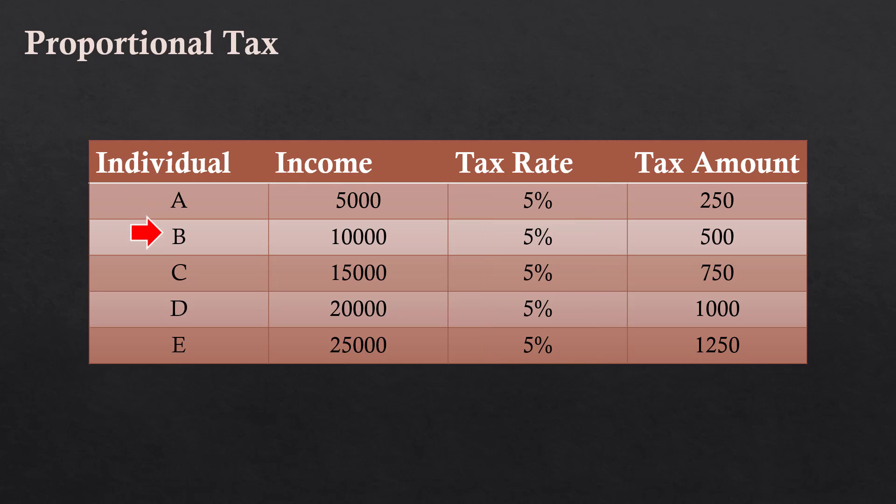Income of the individuals A, B, C, D and E changes from Rs. 5000 to Rs. 25,000. Each individual pays only 5% of his income. In other words, each individual has to pay 5% of the income by way of tax. Though the tax rate is the same, the actual amount increases with income. An important point to be noted here is the income inequality among the individuals.